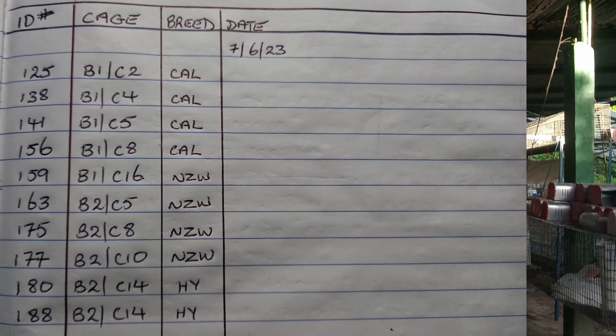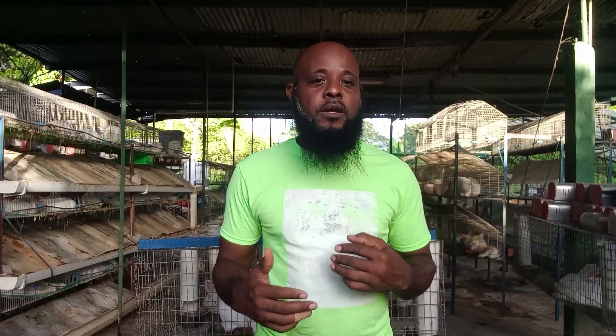First and foremost, when going out to do breeding, the first thing I usually do is make a list. In the first column is the doe's ID number, second column is the cage number, third column is the breed, and the fourth column is the date of the breeding. In cases of line breeding I make additional notes, but this list here is strictly for meat production, so it doesn't matter which doe breeds with which buck.